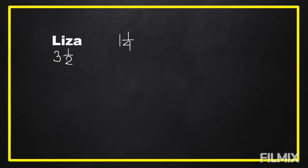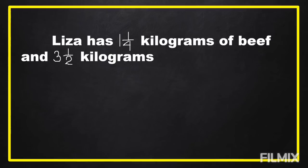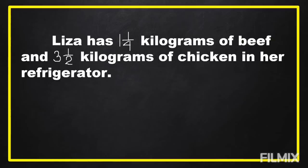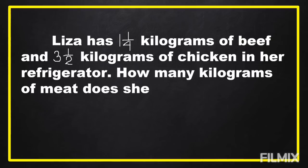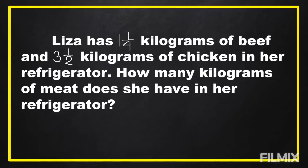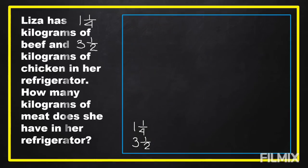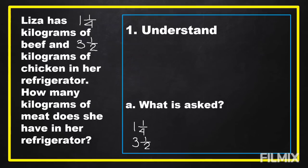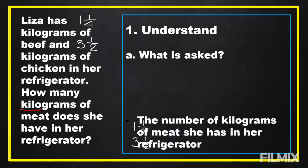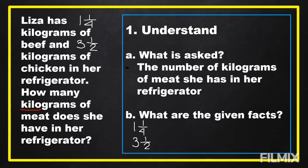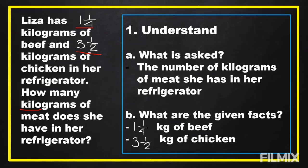Here is our first problem. Lisa has one and one-fourth kilograms of beef and three and one-half kilograms of chicken in her refrigerator. How many kilograms of meat does she have in her refrigerator? To answer our problem, first we're going to understand — we need to know what is asked. It is asking for the kilograms of meat she has in her refrigerator. The given facts are one and one-fourth kilograms of beef and three and one-half kilograms of chicken.